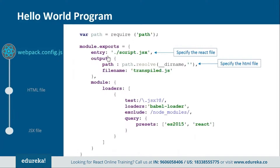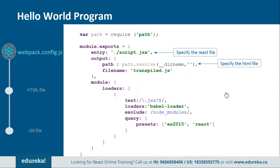This is how the webpack.config.js file looks. In it you provide the entry and output points from where the rendering should start. We are telling it that we have a script.jsx file containing the React code, and that code will be transpiled by the Babel loader into a file called transpiled.js. Essentially this file specifies which file will be transpiled to which one and how it will be done.